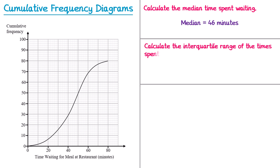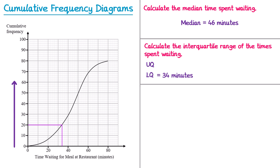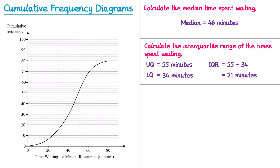Now we'll practice the interquartile range again with the upper and lower quartile. For the lower quartile, one quarter of 80 is 20 — we go up to 20, across to the curve, and down, reading the lower quartile as 34 minutes. For the upper quartile, three quarters of 80 is 60 — we go across from 60, then down, and read off 55 minutes. The interquartile range is the upper quartile minus the lower quartile: 55 minus 34 gives 21 minutes.